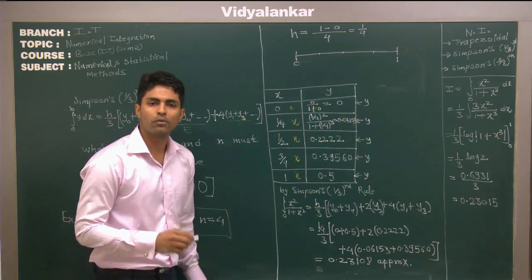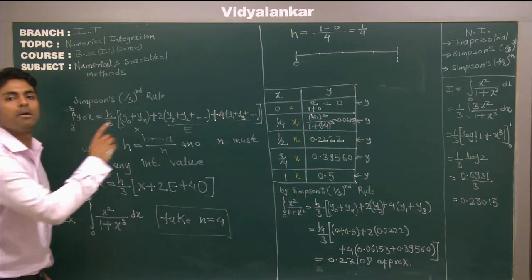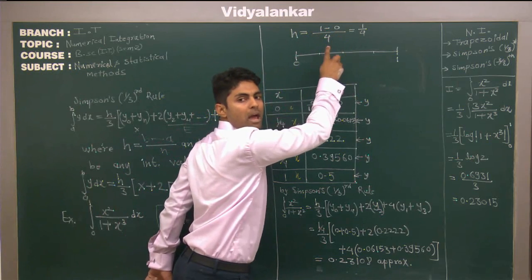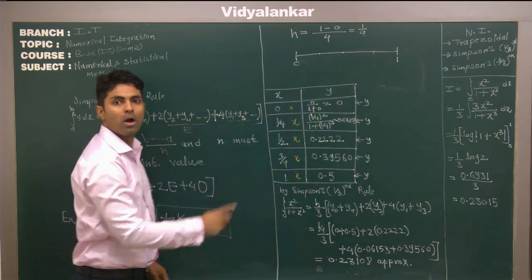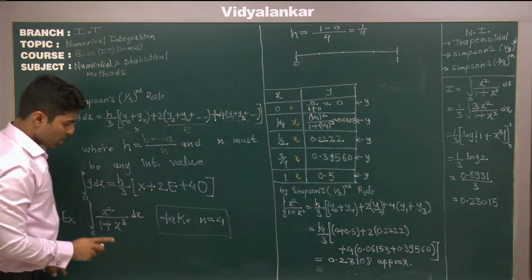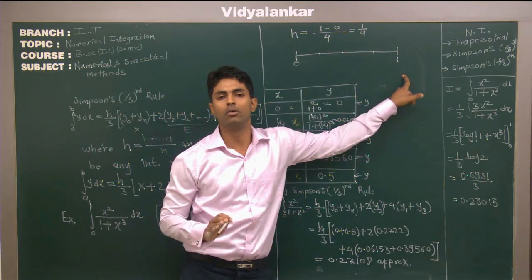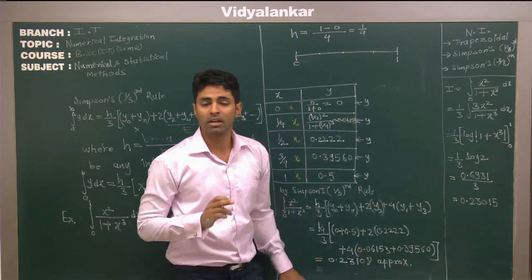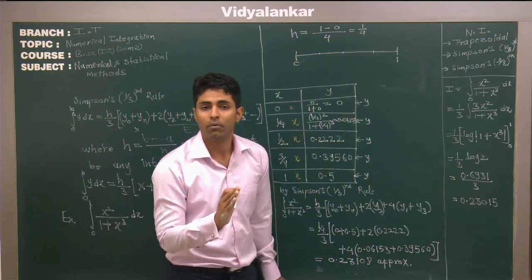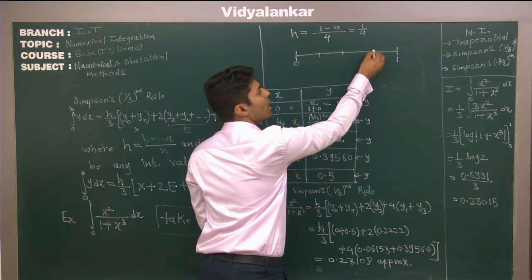First of all we should find out what is the value of h. h is nothing but upper limit 1 minus lower limit 0 upon n which is given as 4. Now consider the interval 0 to 1, we have to divide into sub interval of 4 because here n is given as 4. So we have divided this interval by 4 sub intervals by using the value of h.